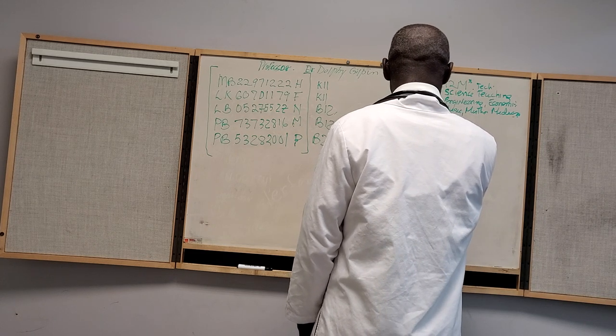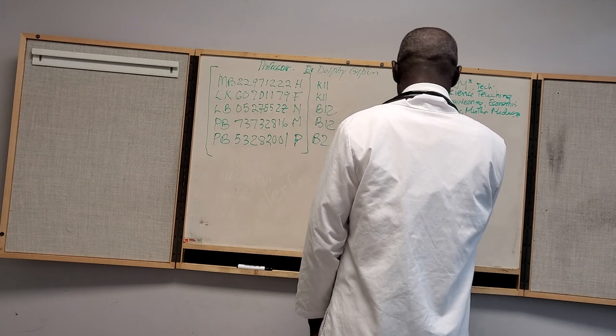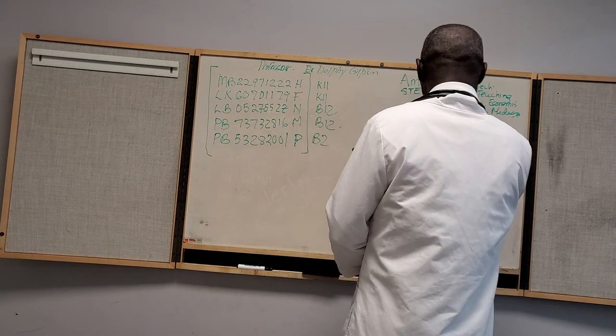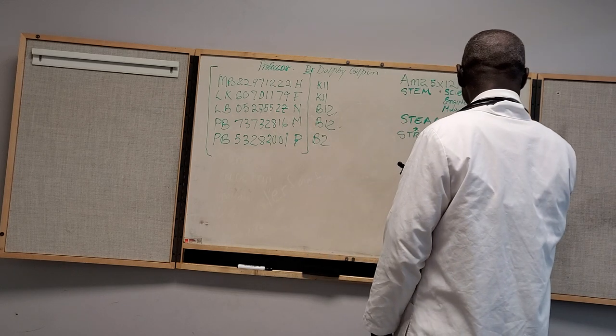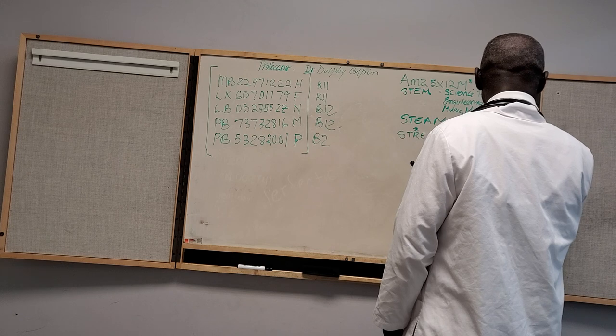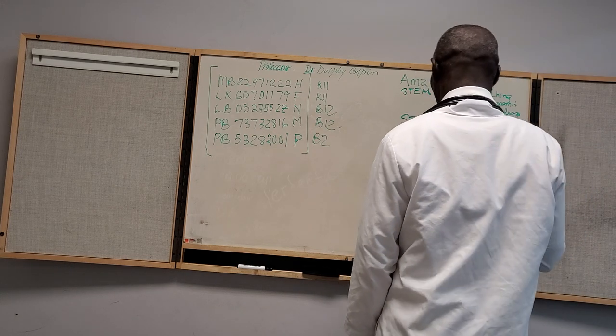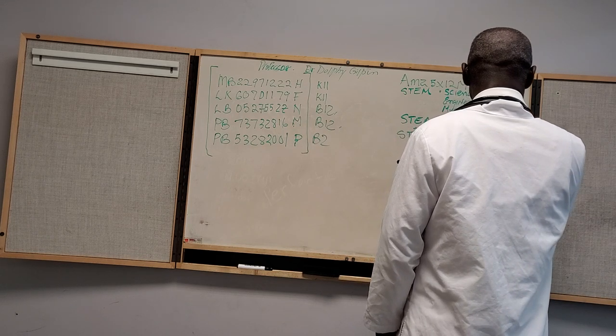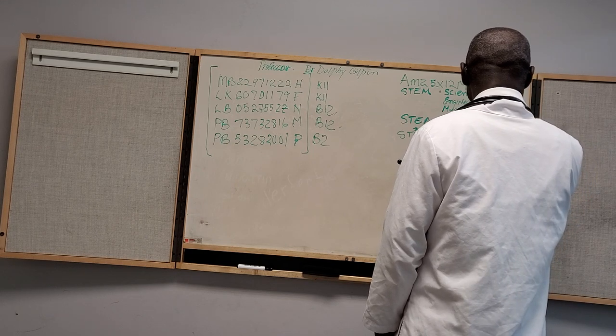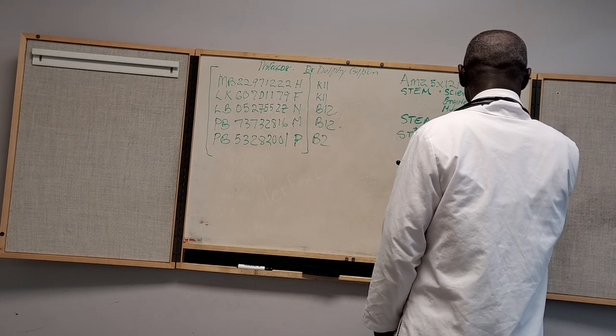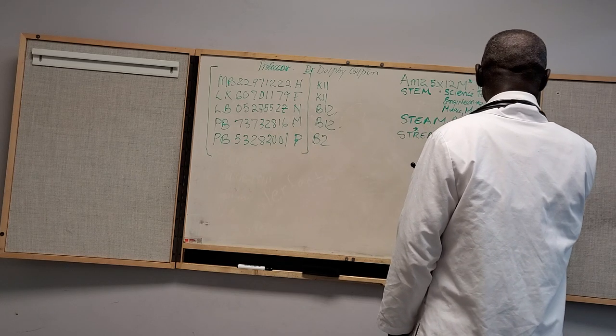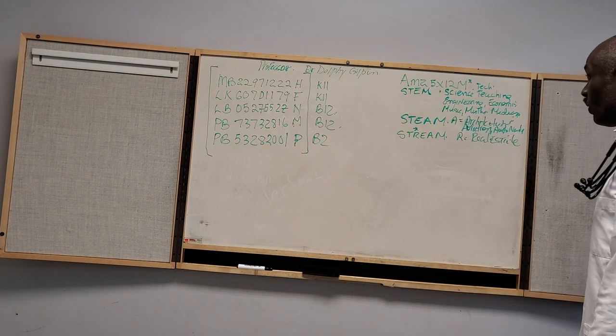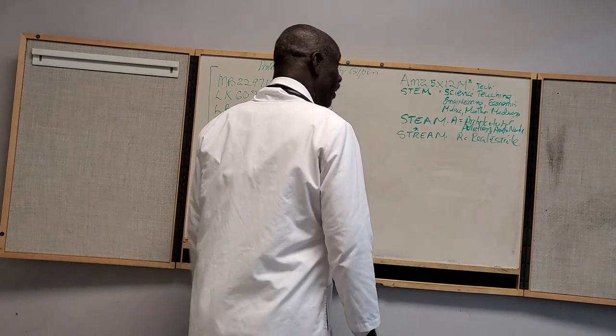Then we have STEAM and STREAM. And for here we just highlight the R standing for real estate, and for here the A equals architecture, archaeology, aviation, astral artics. So you can see it is well-versed, that's why it's called a multi-dimensional amazing 5x12 matrix.